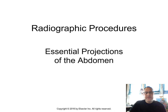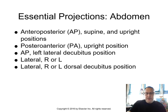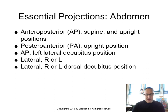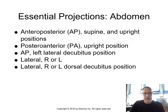The essential projections of the abdomen include: the AP supine and the upright position, the PA, the left lateral decubitus, the lateral right or left, and the lateral right or left dorsal decubitus position.